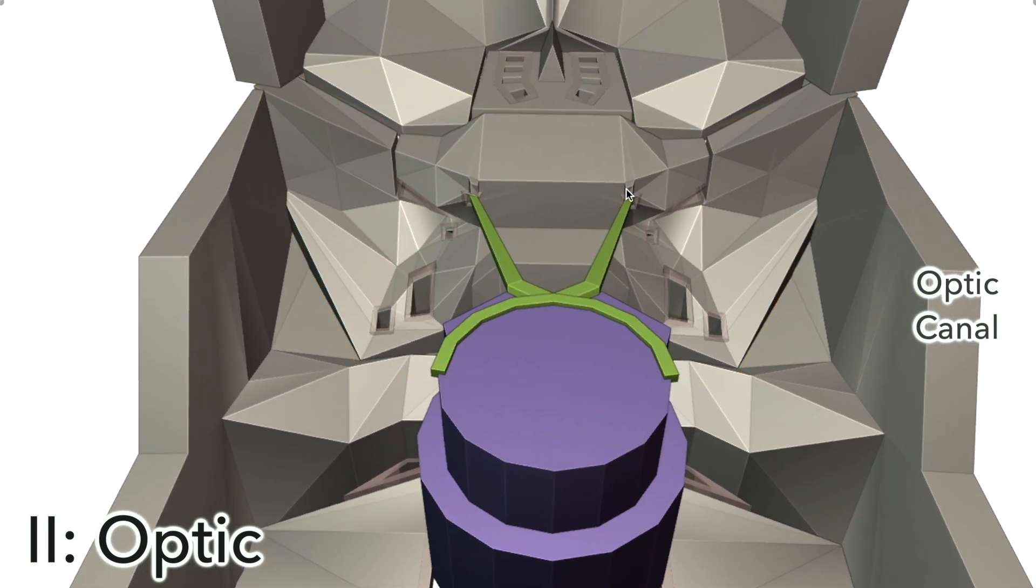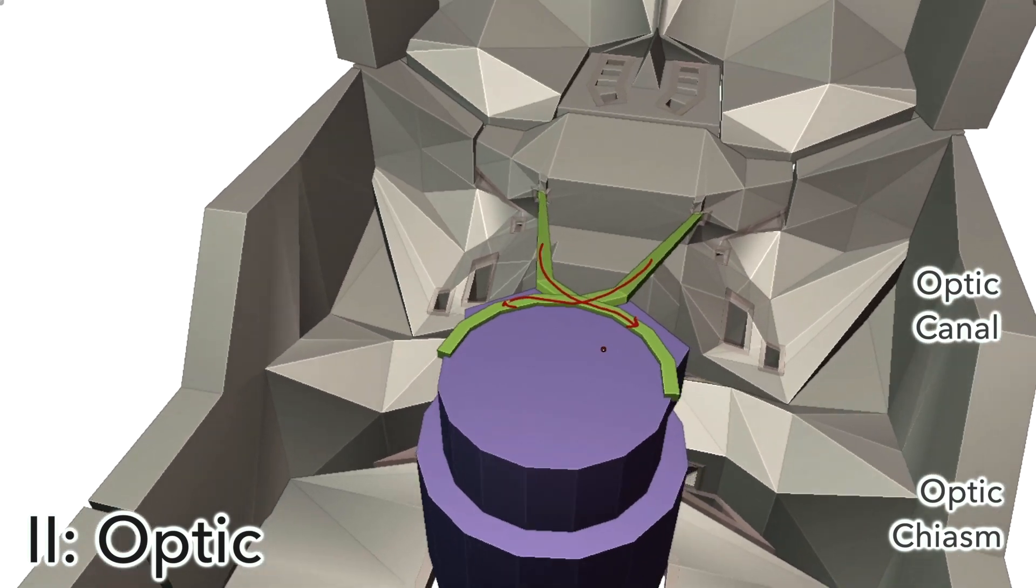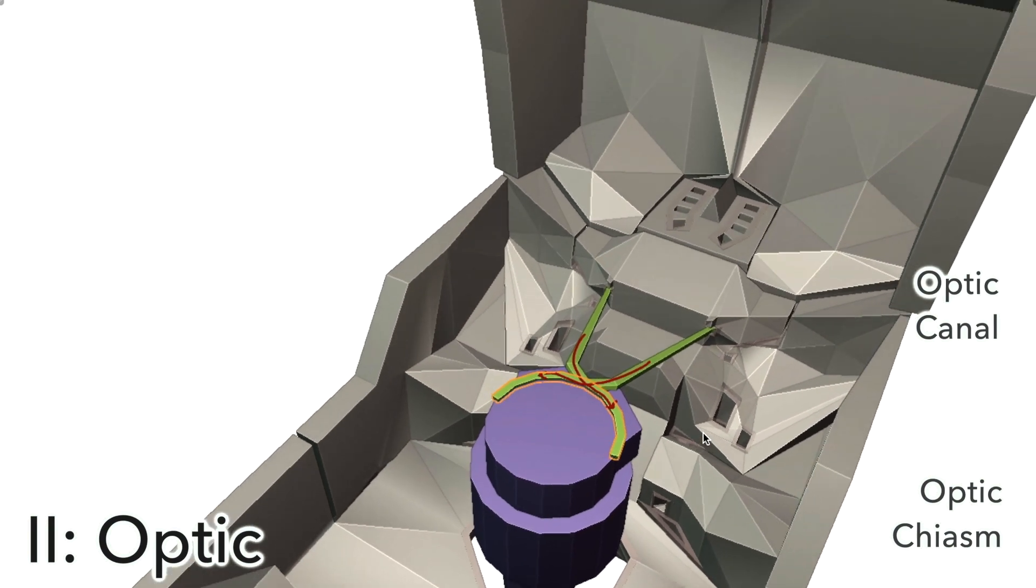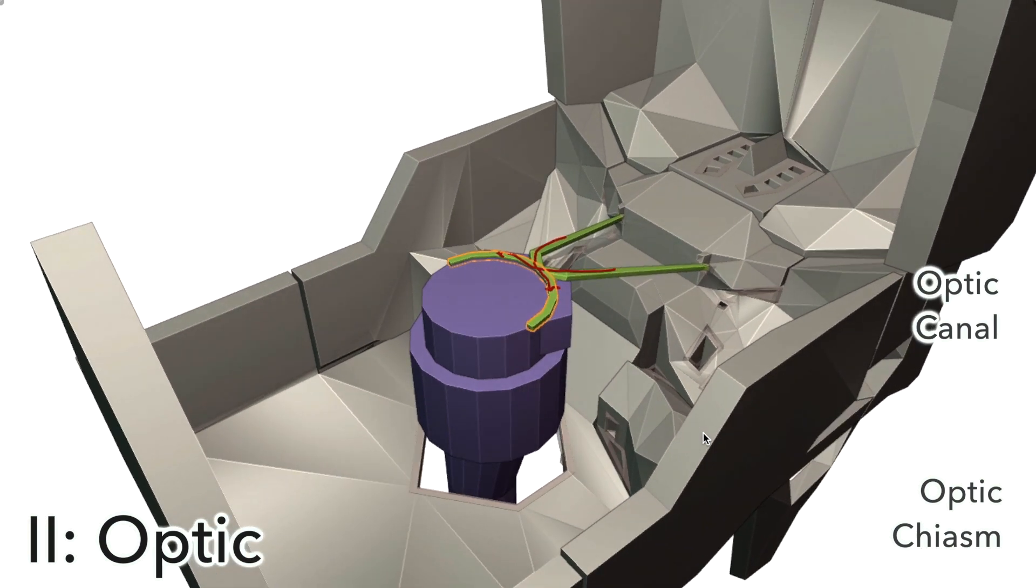The optic nerve then travels backwards to create this optic chiasm. Chiasm literally means crossing in ancient Greek. There's this crossing here where the optic nerve that was on the left anatomically passes to the right and vice versa from the right to the left. Then past the optic chiasm, this part is called the optic tract, which heads back to the visual cortex via the thalamus. The function of the optic nerve is to provide us with our sense of sight.